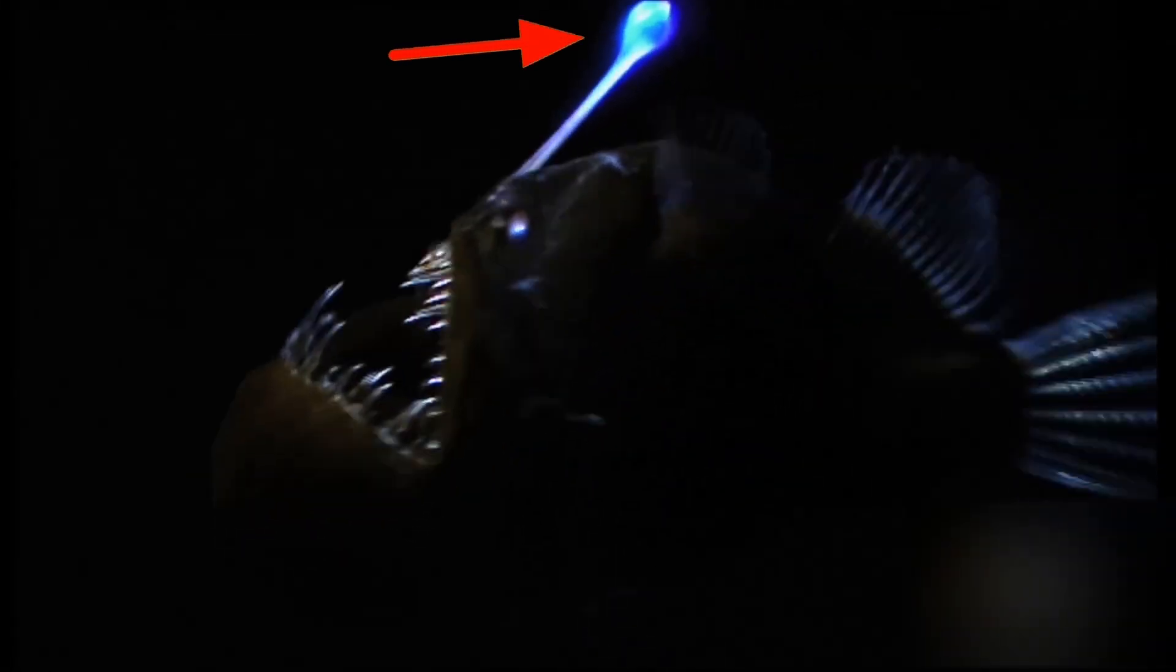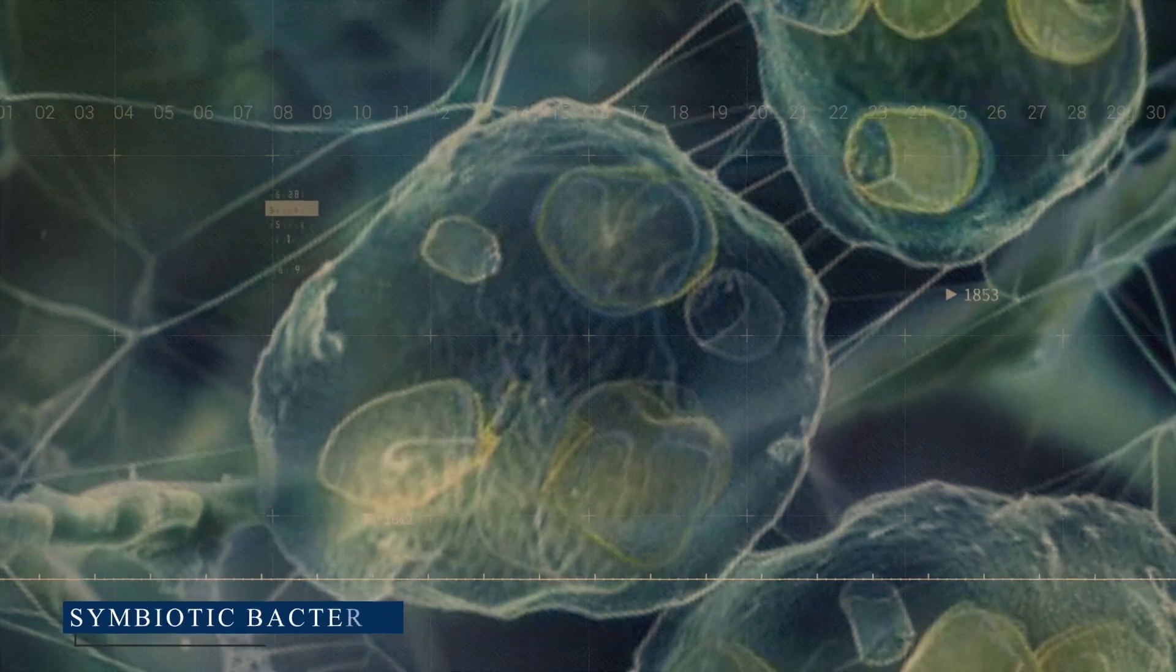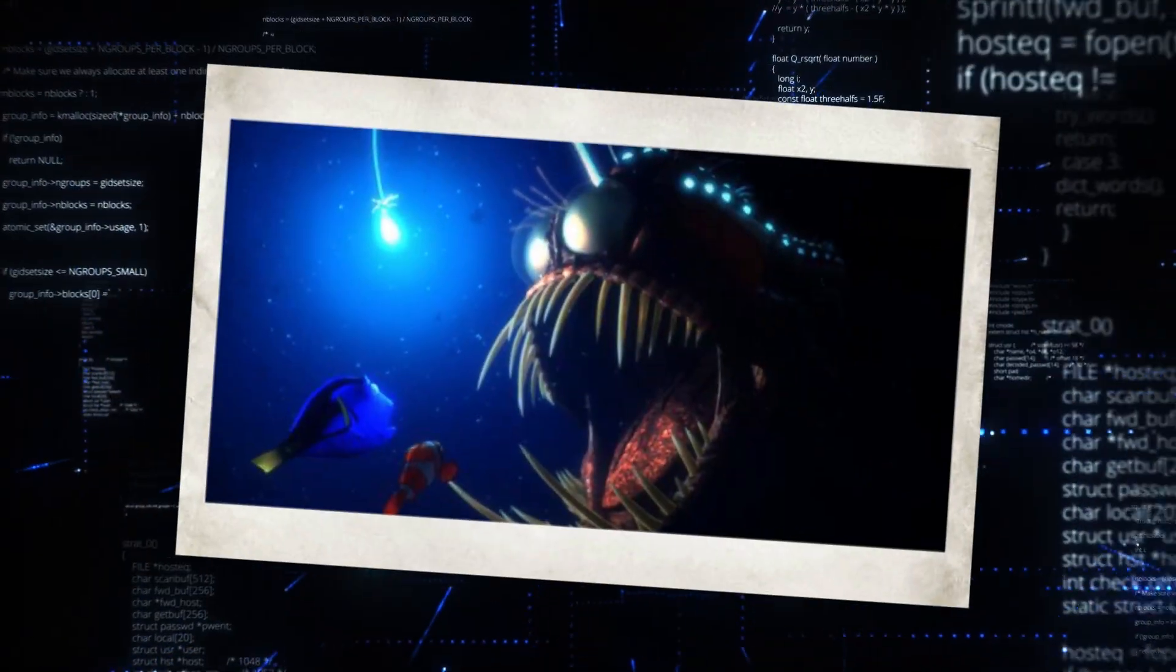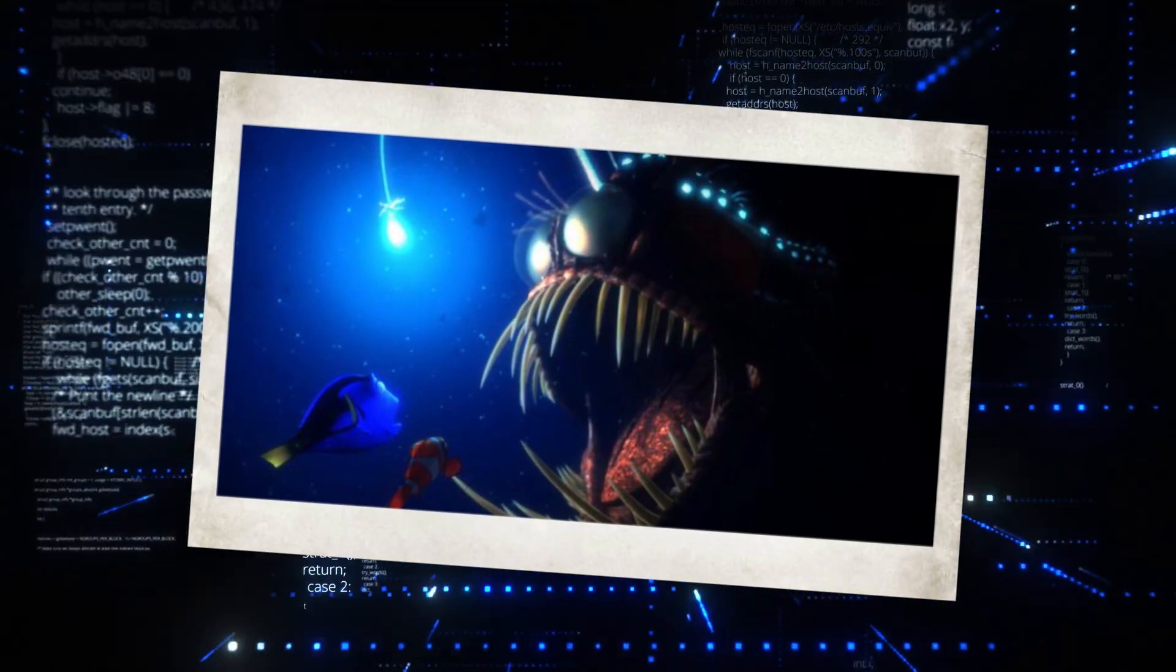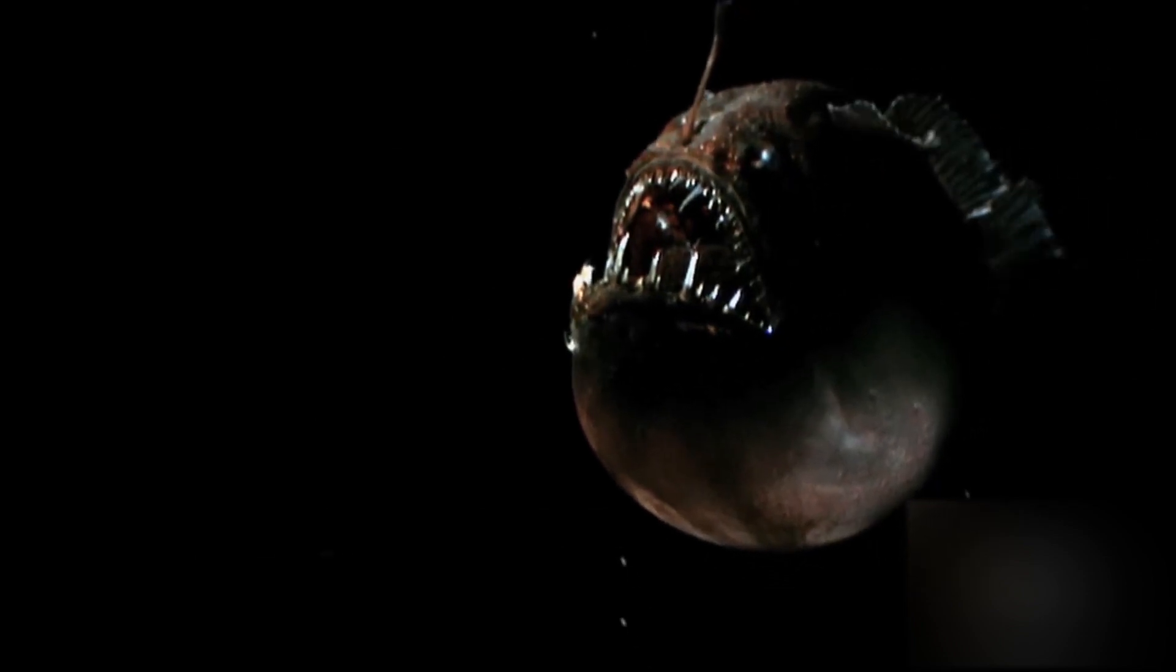At the end of this fishing rod dangles a bioluminescent lure, powered by symbiotic bacteria living within. This glowing orb acts as a beacon in the darkness, drawing in curious prey who mistake it for a potential meal. As the prey approaches, the anglerfish strikes, swallowing its victim whole.